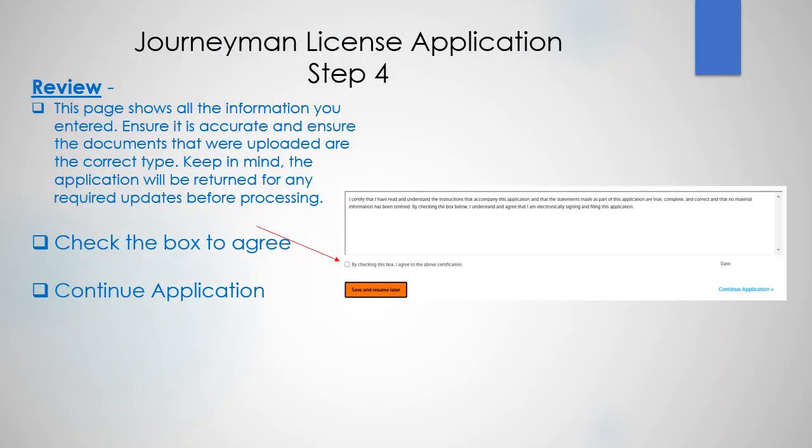Step 4 has to do with review. This page shows all the information that you entered. Ensure it is accurate and ensure the documents that were uploaded are the correct type. Keep in mind the application will be returned for any required updates before processing. Now check the box to Agree, then Continue application.